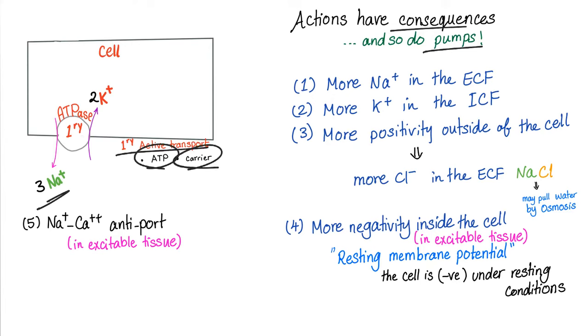Quick pharmacology connection: beta-agonists stimulate the sodium-potassium antiport, driving lots of potassium into the cell, which means less potassium outside — resulting in hypokalemia.